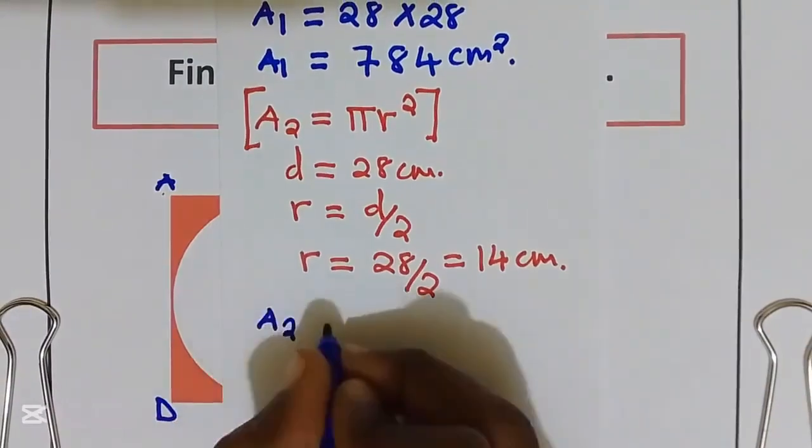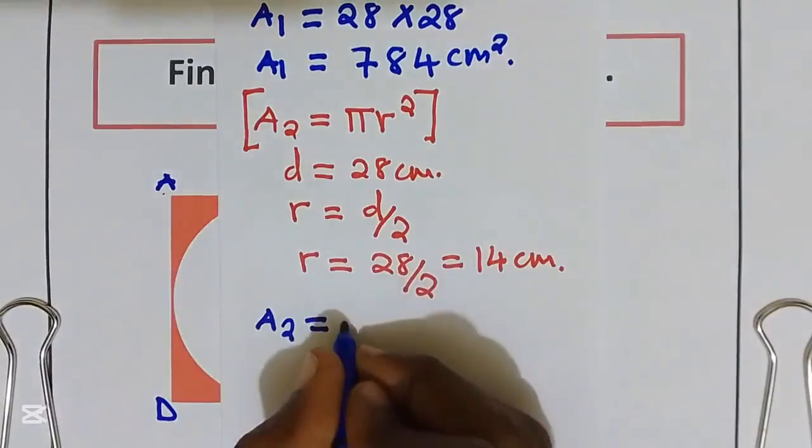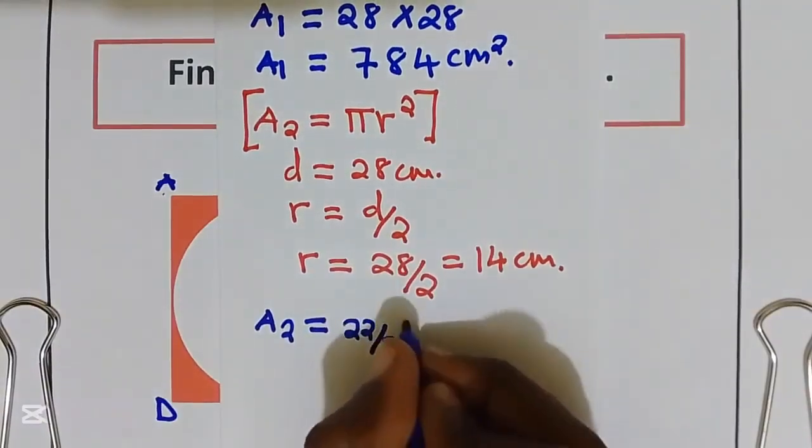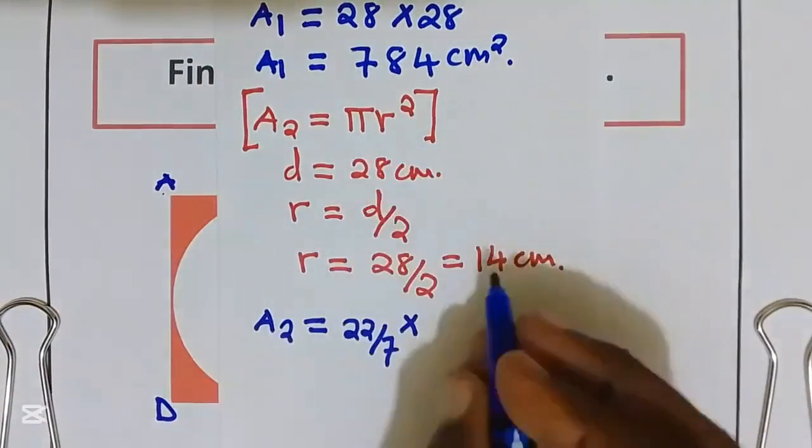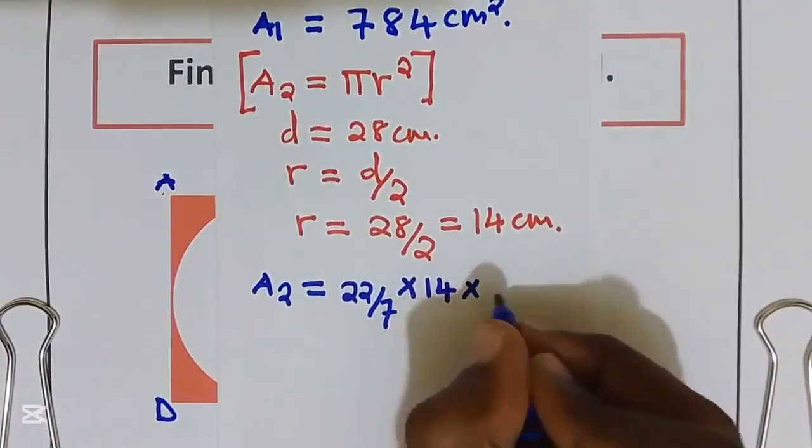Area 2 is equal to Pi. I will use 22 over 7 multiply by R square. R is equal to 14, that is 14 multiply by 14.